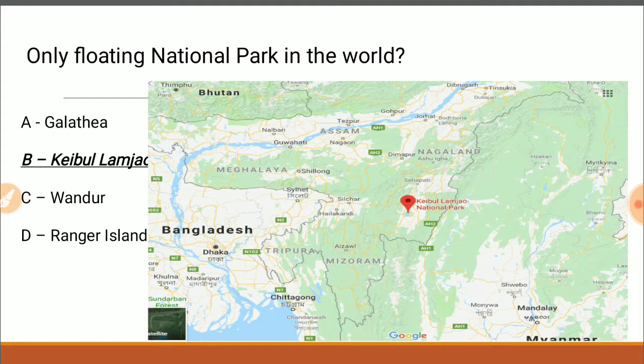Keibul Lamjao is the only floating national park in the world. Recently there is news of a school established in this region. The state animal of Manipur, the Sangai, is a subspecies of the brow-antlered deer and is indigenous to this area. There are various legends and folk tales associated with the Sangai. So the answer is Keibul Lamjao National Park in Manipur.